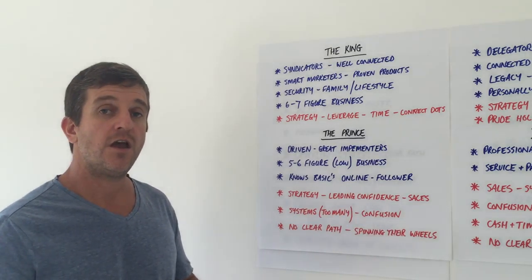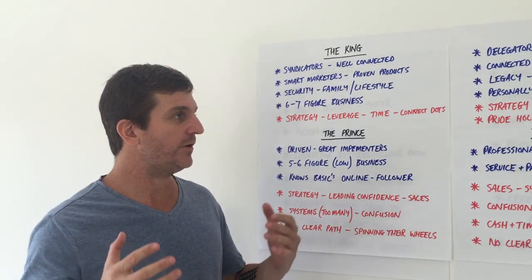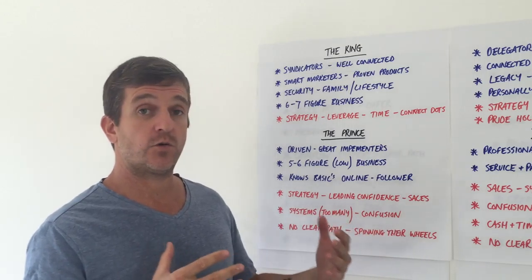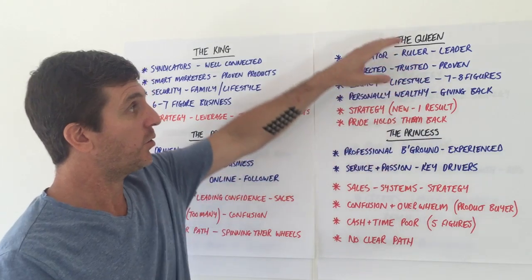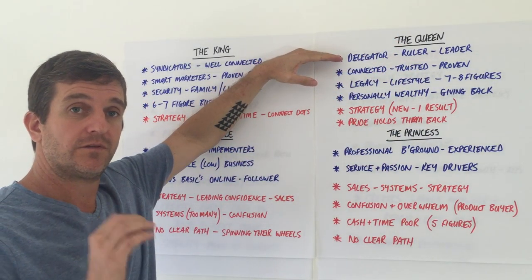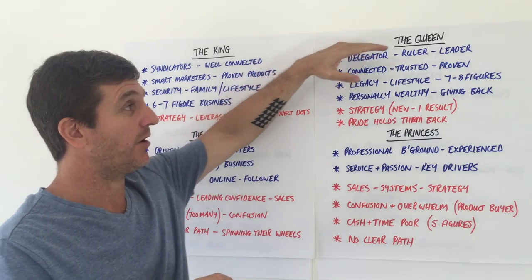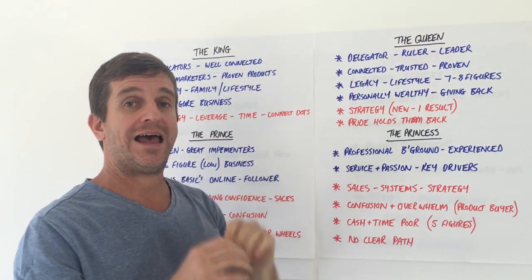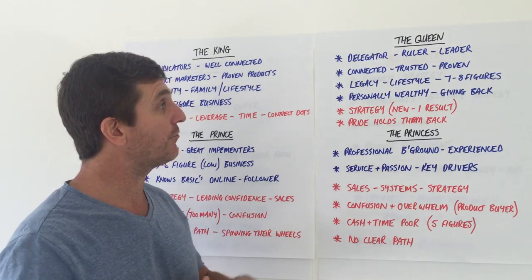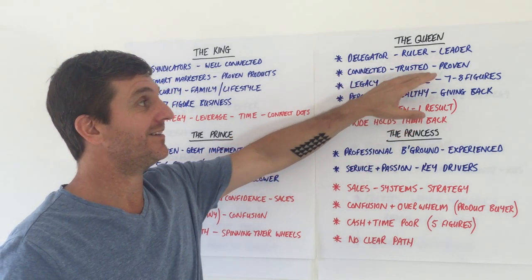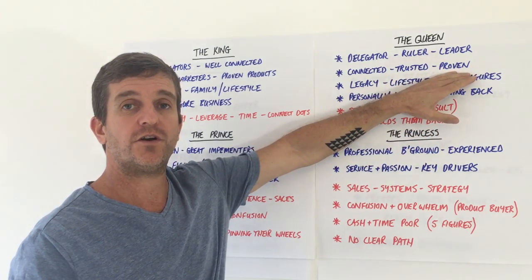If we move across to the Queen now, they are in a totally different situation. The Queen is the consummate delegator - they are a ruler, they are a leader, able to run big teams of people. They're professionals in their own right, well connected, trusted in the marketplace, and they have proven results on the board.